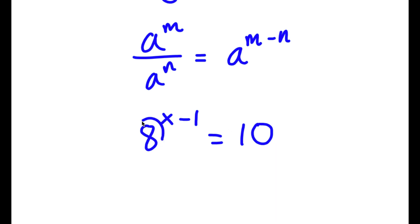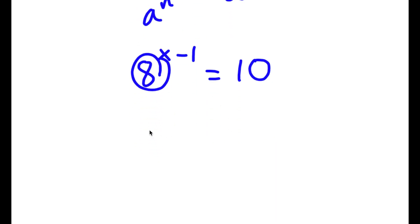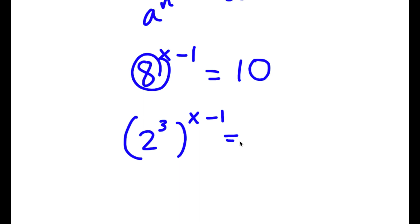Now 8 I can rewrite as 2 to the power of 3, so now I have 2 to the power of 3 to the power of x minus 1 is equal to 10.